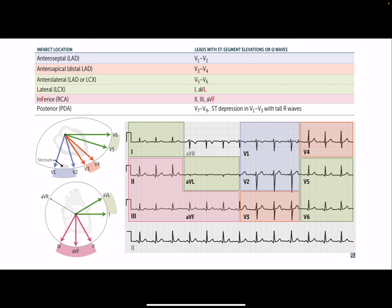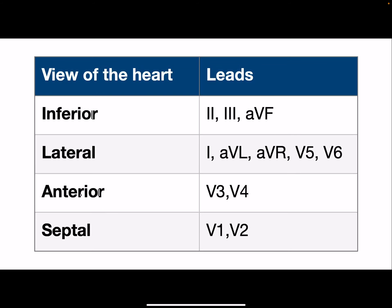The leads correspond to different coronary territories: Leads II, III, and aVF look at the inferior portion, covered by the RCA. Leads aVL and I look at the lateral wall, covered by the lateral circumflex artery (LCX). The anterior descending artery (LAD) — the 'widowmaker' — covers the medial precordial leads V1 and V2, while V3 and V4 are between the LAD and LCX territories, and V5 and V6 are also lateral circumflex.